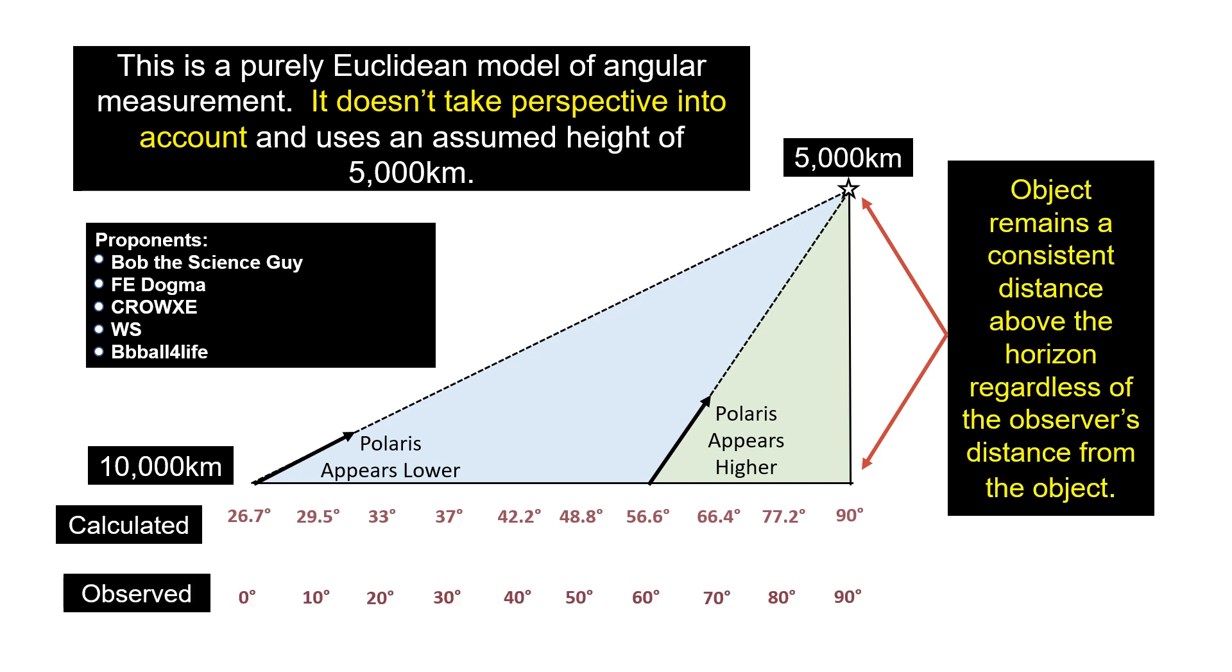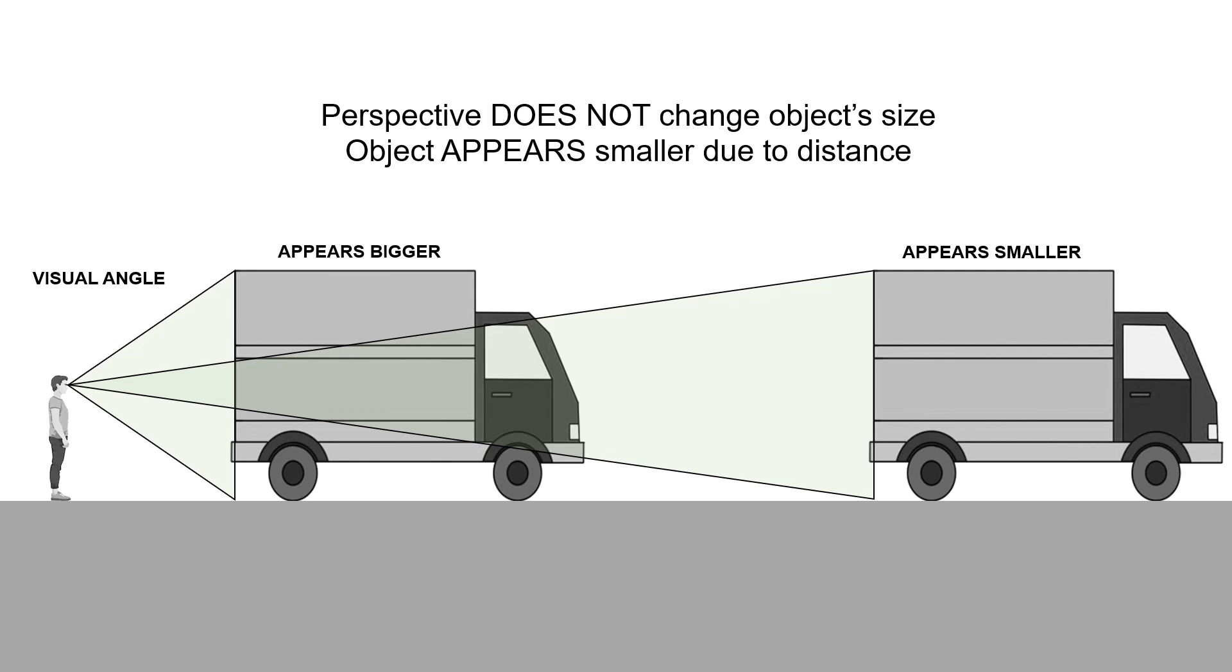'Object remains a consistent distance above the horizon regardless of the observer's distance from the object.' Now, this shows a real fundamental misunderstanding of how perspective really works. Do I really need to explain this?